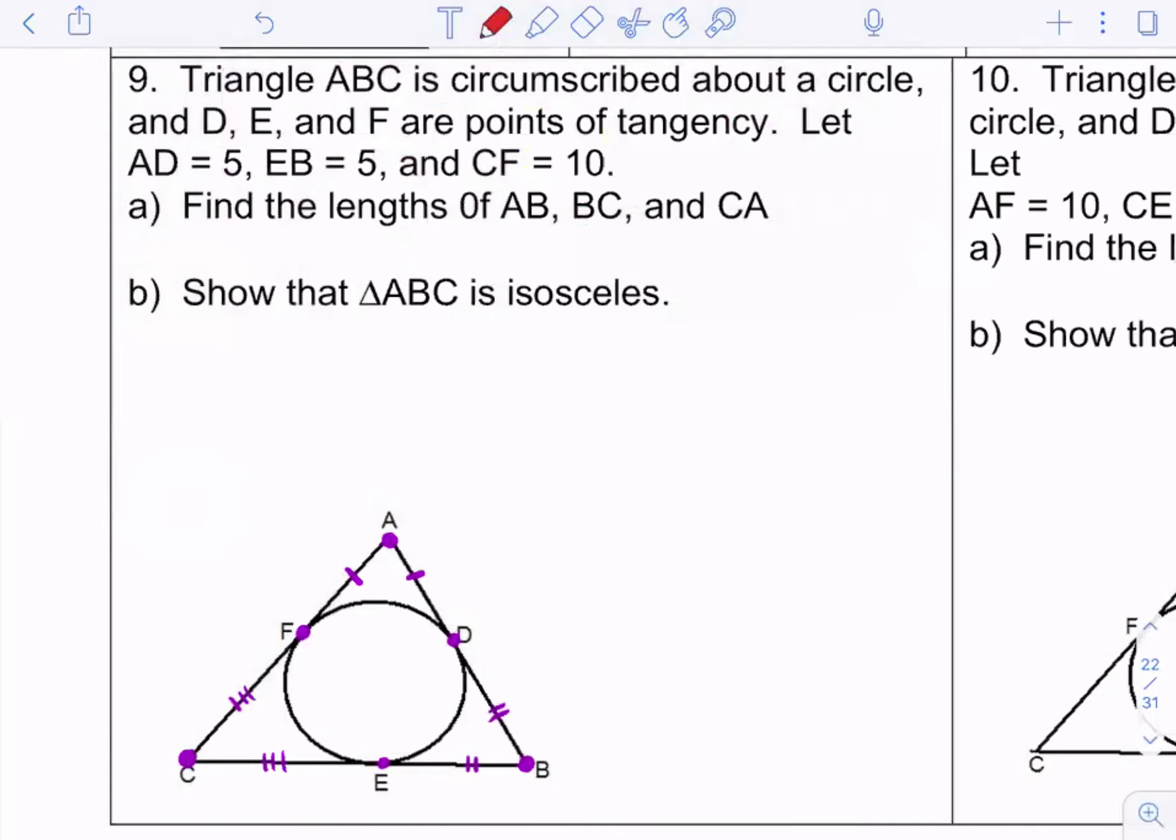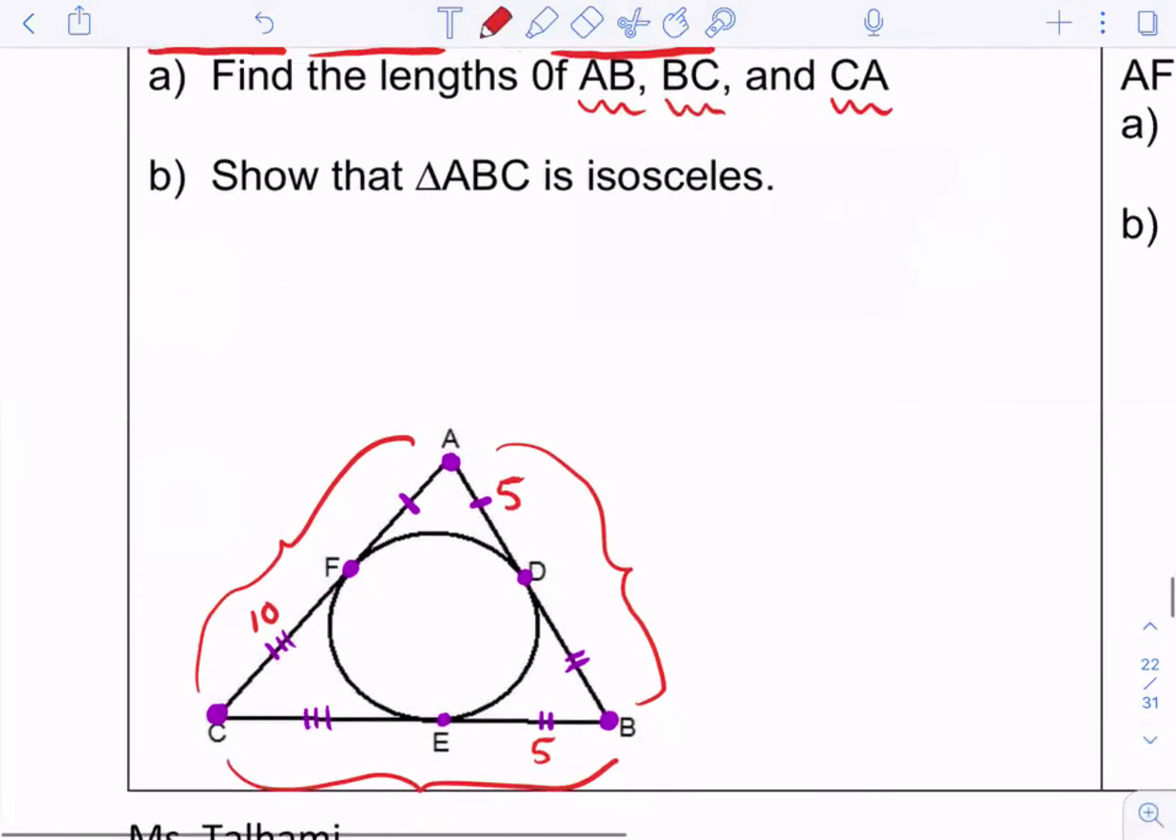So this is a fact. And then so DB should be equal to BE, CE. And CF should be equal to? CE. CE. So very important that you do that because now if I read the problem, it says we have a triangle. ABC is circumscribed, is outside of a circle, circumscribed. And we have D, E, and F are points of tangency. So these are tangent lines. Let AD equal 5. So let's label that. And EB equal 5. And CF equal 10. They're asking you to find the lengths of AB, BC, and CA. So these are the full sides of these triangles.